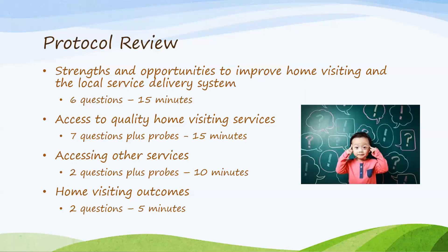The third section should take about 10 minutes and dives into what it looks like to access other services that families need in their community. The first question focuses on basic needs and services in general, and the second dives into services for substance use, depression, and domestic violence. These are difficult topics, and the facilitator should carefully attend to the reaction of the group and modify follow-up questions based on their observations. Because the setting is not confidential, emphasize asking about what home visiting programs do well and what they could do better, rather than individual experiences.